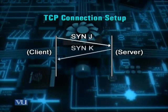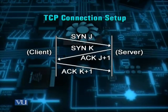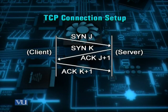TCP کا model of use تین فیزز پر مشتمل ہے: پہلا فیز connection setup کا، دوسرا فیز data send کرنے کا، اور تیسرا فیز connection tear down کا۔ Connection setup کے اندر three-way handshake ہے جس میں client اور server کے درمیان connection establish کی جاتی ہے — پہلے SYN segment بھیجا جاتا ہے۔